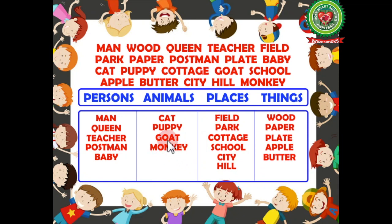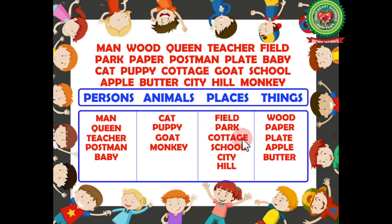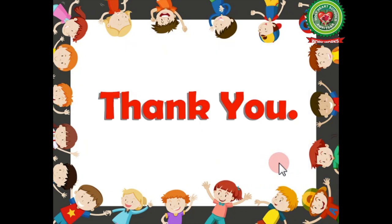So today we have learned to classify different nouns as person, animal, place or thing. I hope that you have understood the topic very well. Practice it thoroughly. Stay home, stay safe. Thank you.